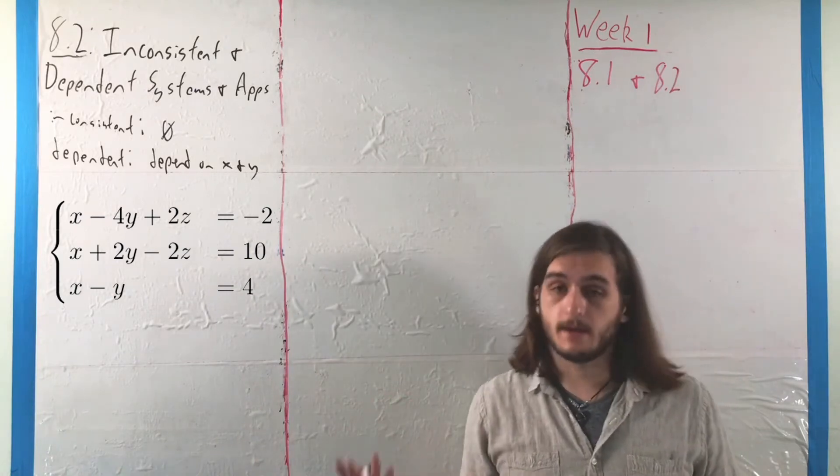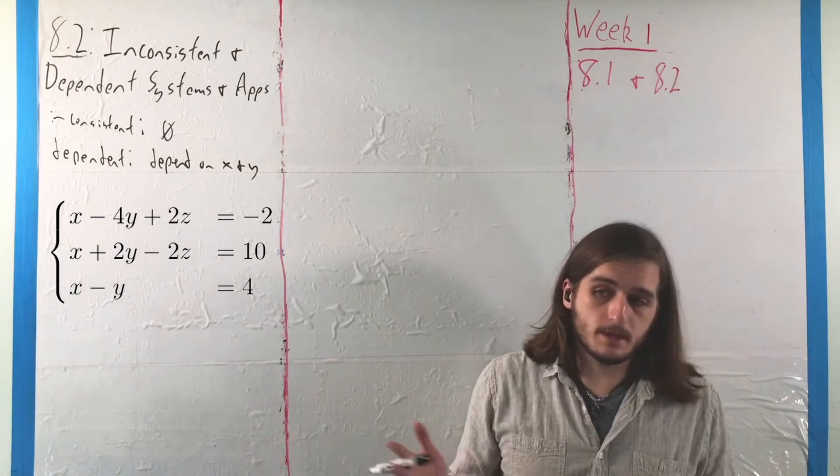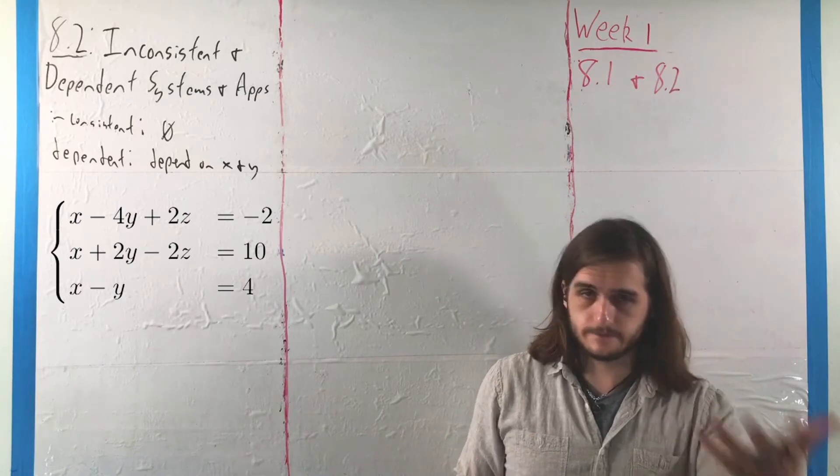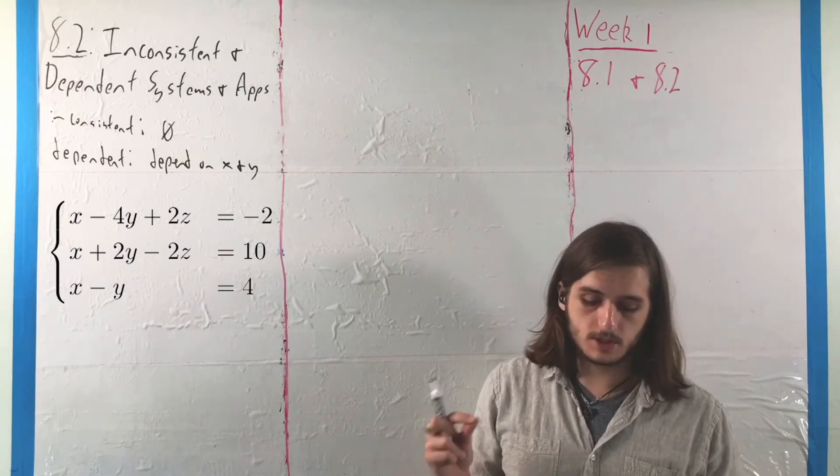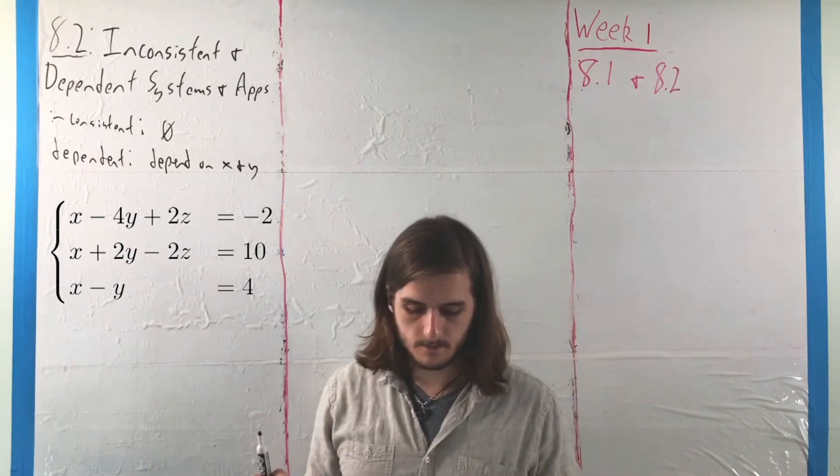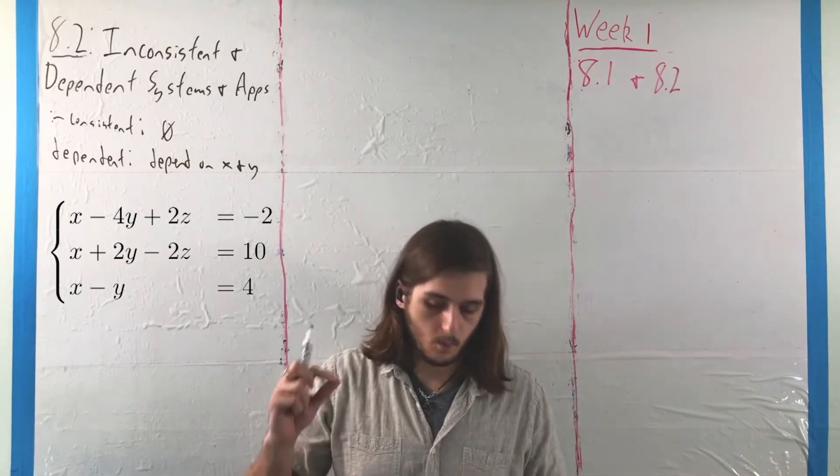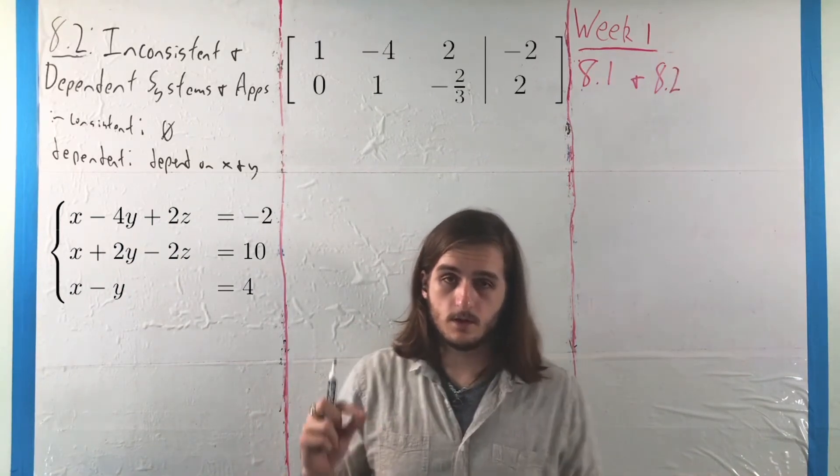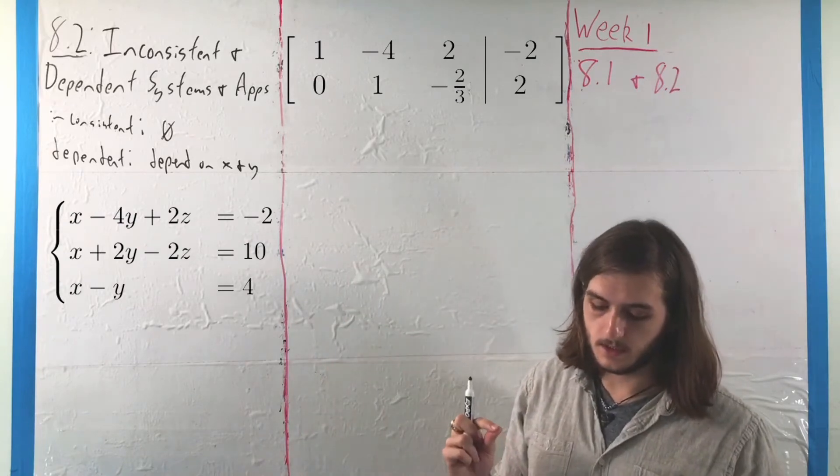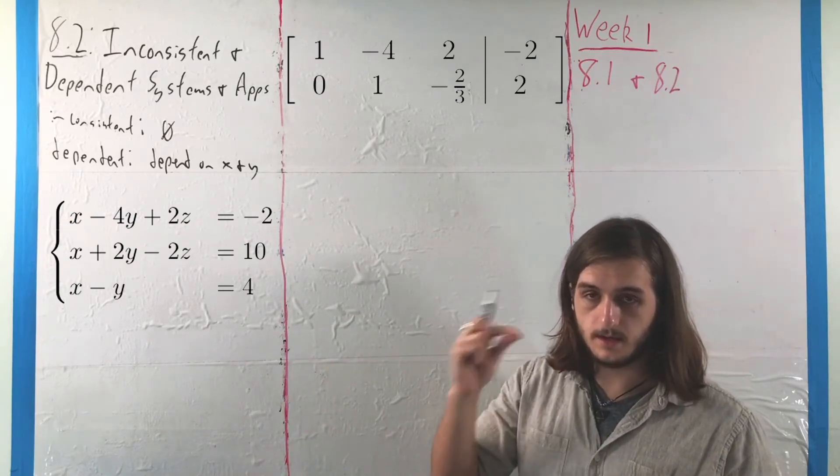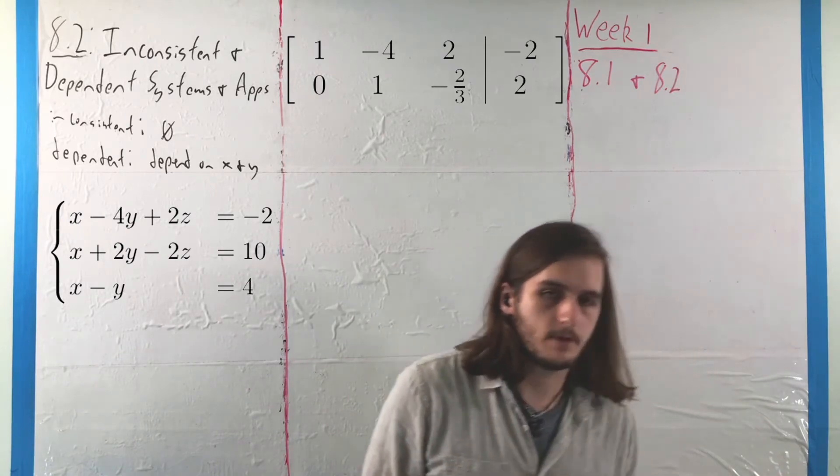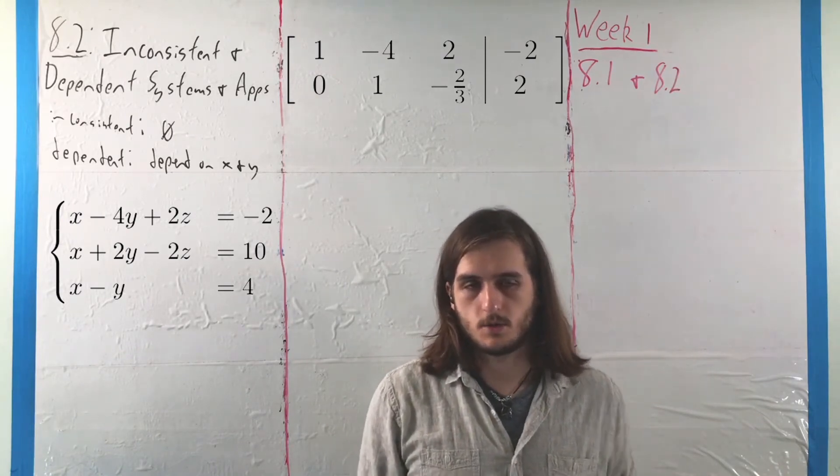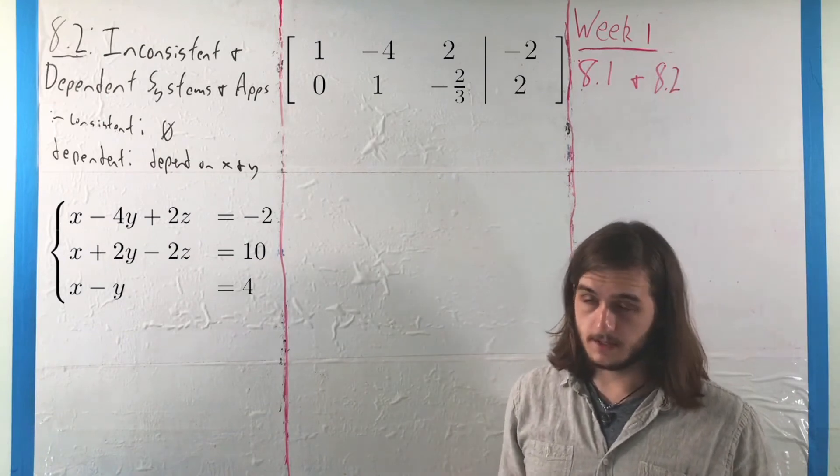But anyway, here we made an adjustment, and now that means that our third row, our third equation doesn't tell us anything, so we can reduce our system down to just looking at those first two rows. We can look at 1, negative 4, 2, with negative 2 on the other side, along with 0, 1, negative 2 thirds, 2, where I took one more small row operation to throw in a constant multiple to simplify the second row.